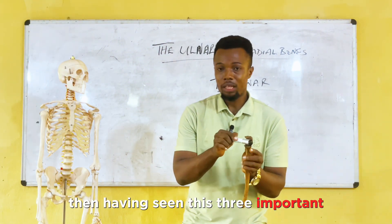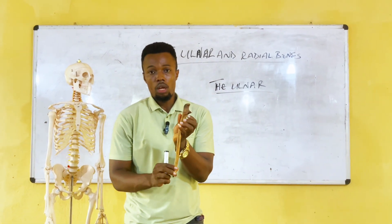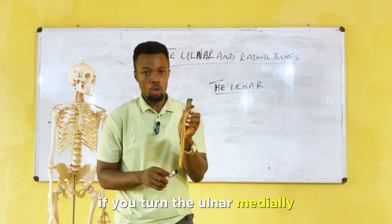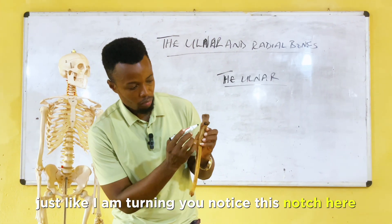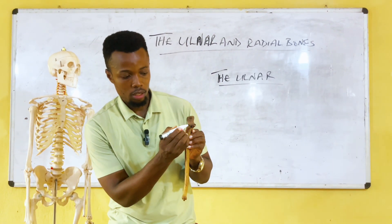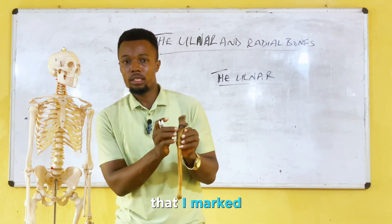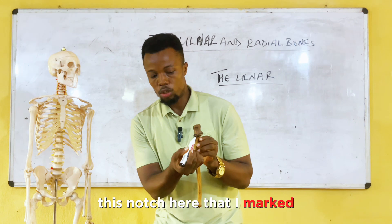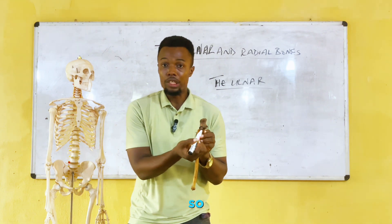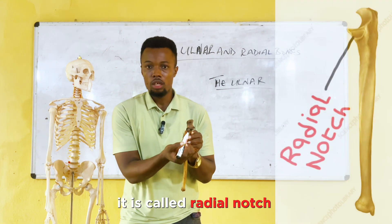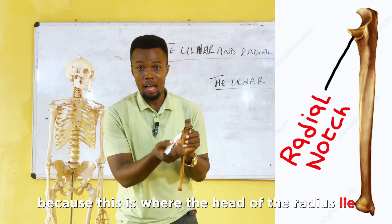If you turn the bone to the side, you notice a notch where the head of the radius lies. This is called the radial notch, because this is where the head of the radius articulates.